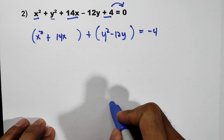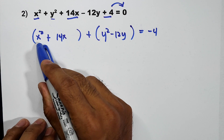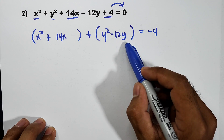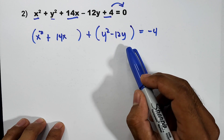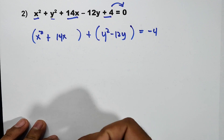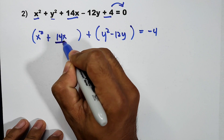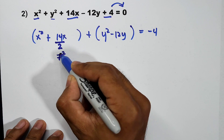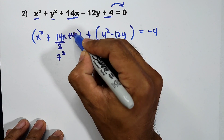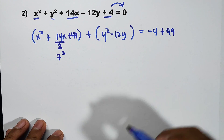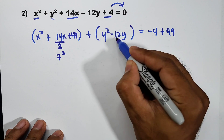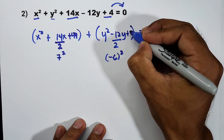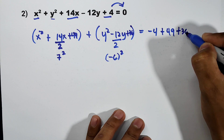We complete each group into a perfect square trinomial. For x squared plus 14x: divide 14 by 2 to get 7, then square it to get 49 — so add plus 49 to both sides. For y squared minus 12y: divide 12 by 2 to get 6, then square it to get positive 36 — so add plus 36 to both sides.